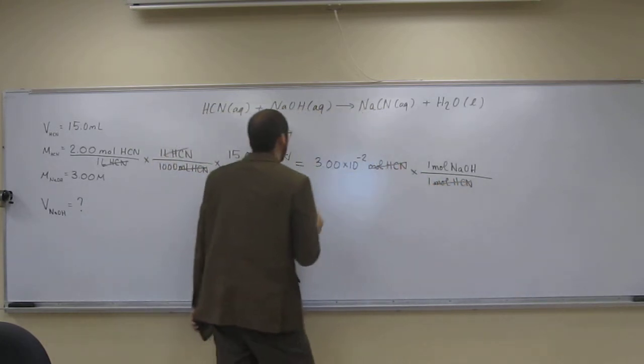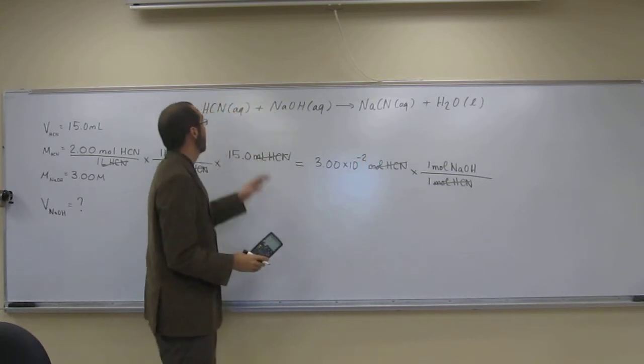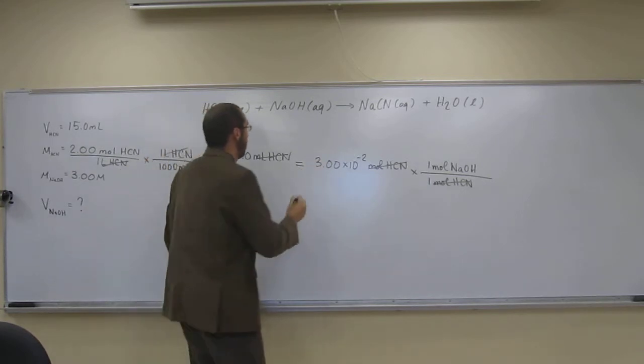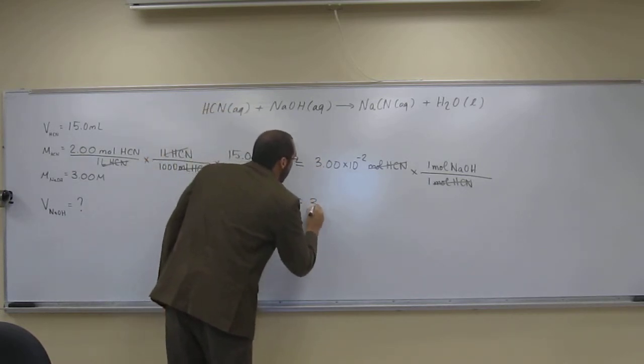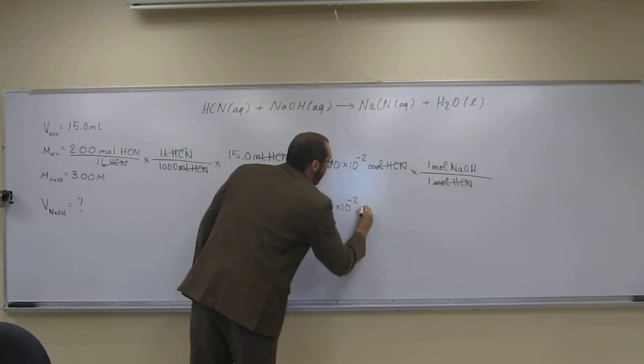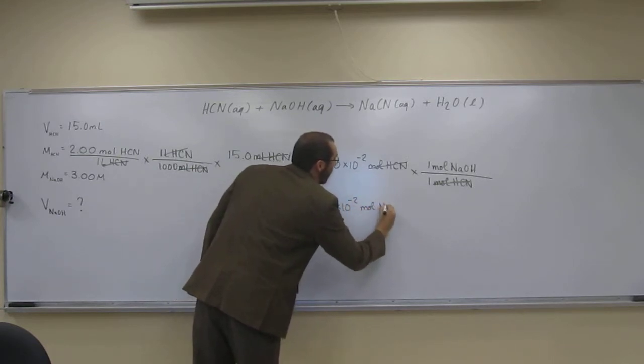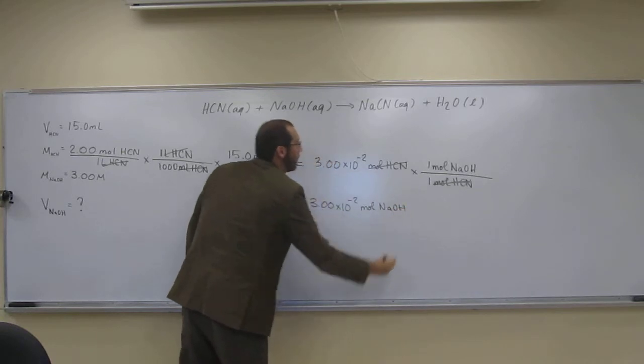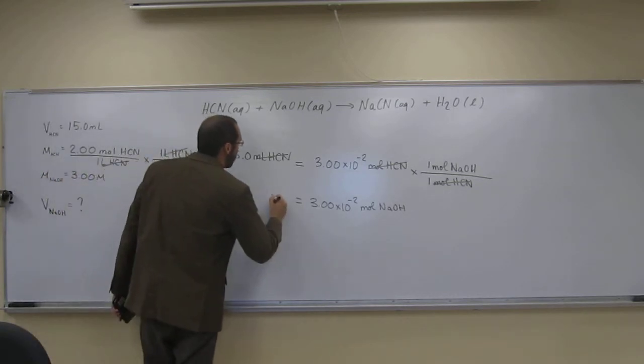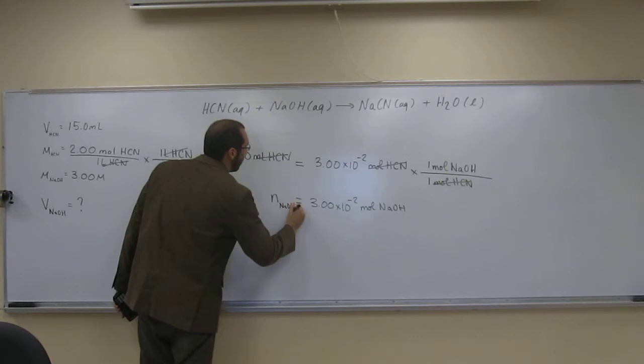So the number of moles of NaOH that we need to completely react with that many moles of HCN is going to be 3.00 times 10 to the negative 2 moles of NaOH. Like that. Does that make sense? Okay, wonderful. But we're not interested necessarily in that number of moles of NaOH.